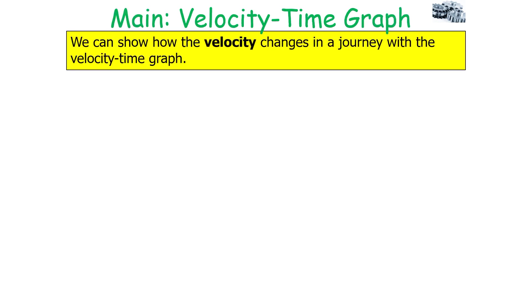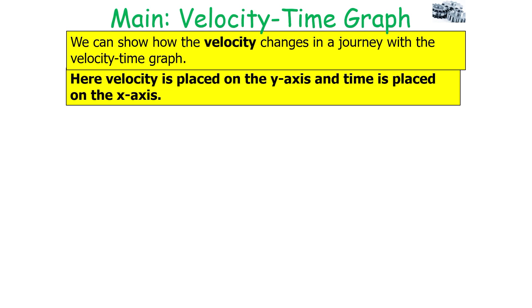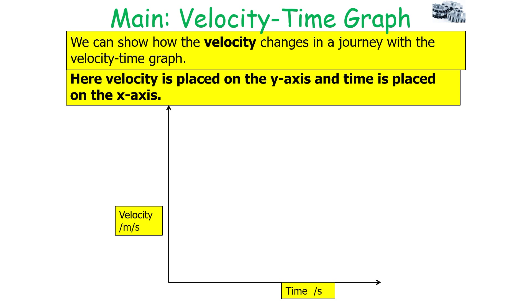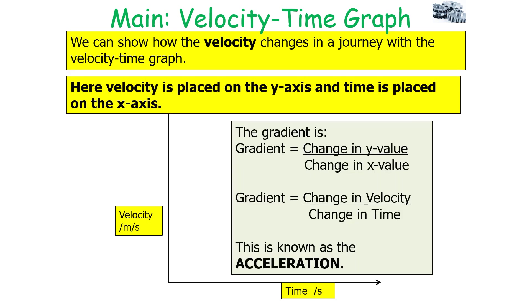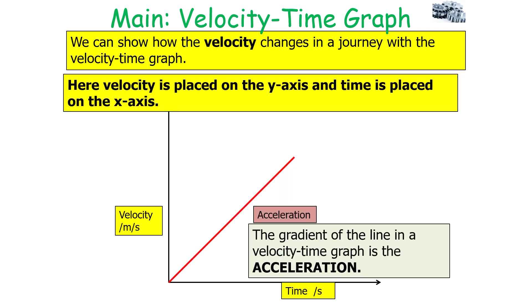We can show how velocity changes in a journey with a velocity-time graph. Here, velocity is placed on the y-axis and time on the x-axis. The gradient is the change in y divided by the change in x — that is, the change in velocity divided by the change in time — which is known as acceleration. So the gradient of the line in a velocity-time graph is the acceleration.